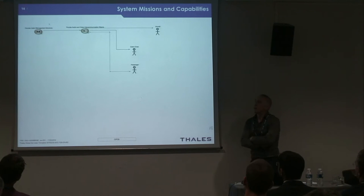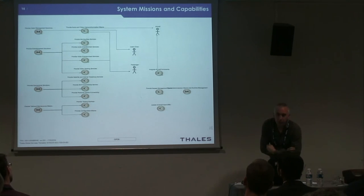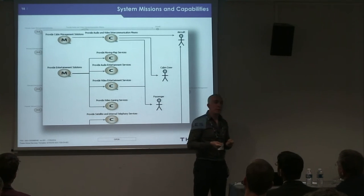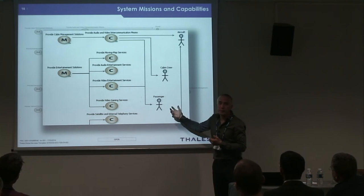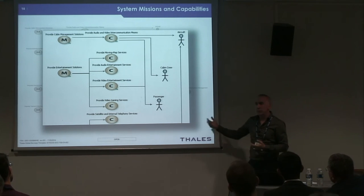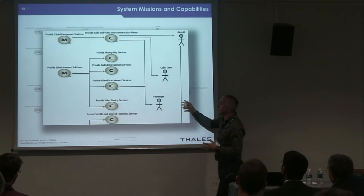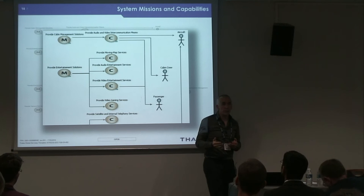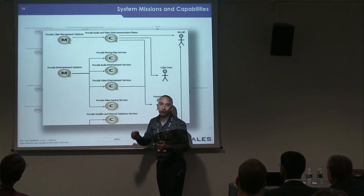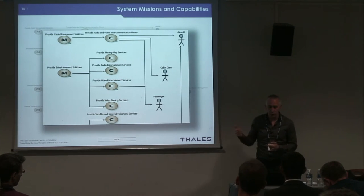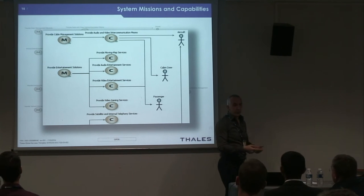In the case of the in-flight entertainment system, we have several missions: provide cabin management solutions, provide entertainment solutions, provide connectivity — for example, if I come with my smartphone and want Wi-Fi access — and provide maintenance capabilities so ground operators can quickly update the system. These missions involve capabilities, which are similar to use cases in UML. For example, 'provide video entertainment services' is mainly about VOD and so on. We have actors, and these capabilities are illustrated by functional chains, scenarios, and data flows.